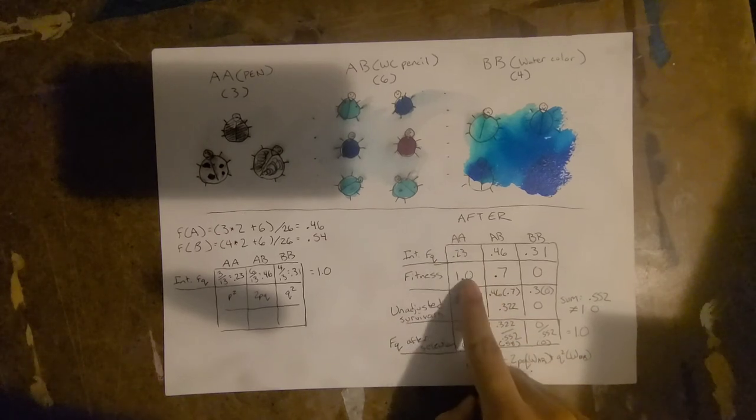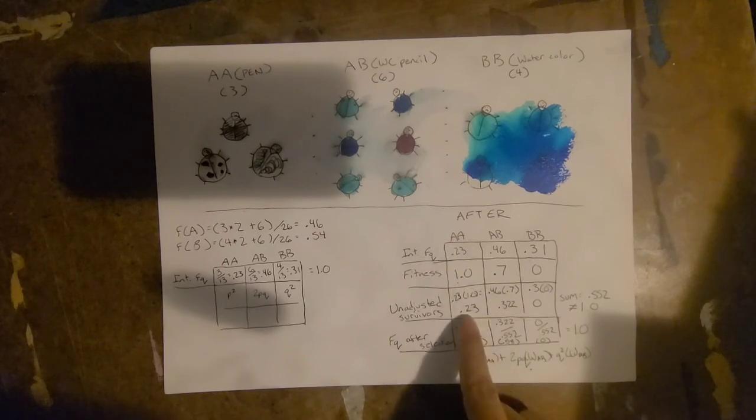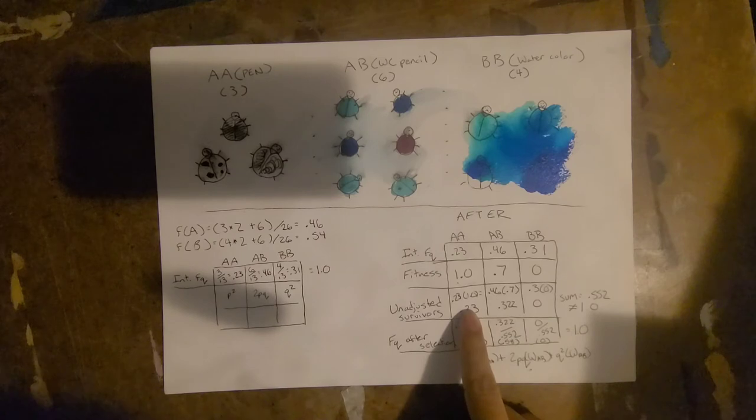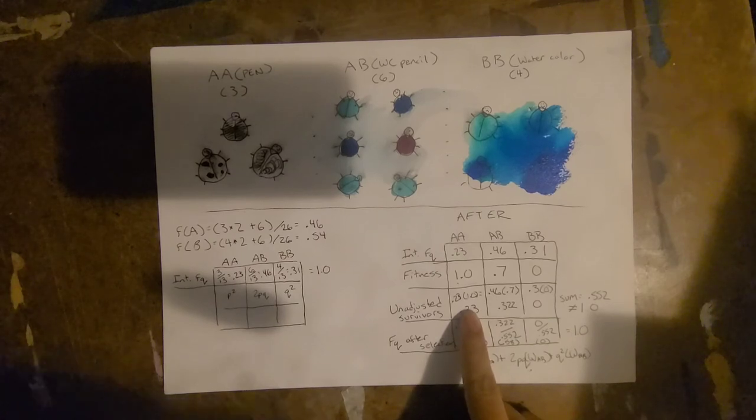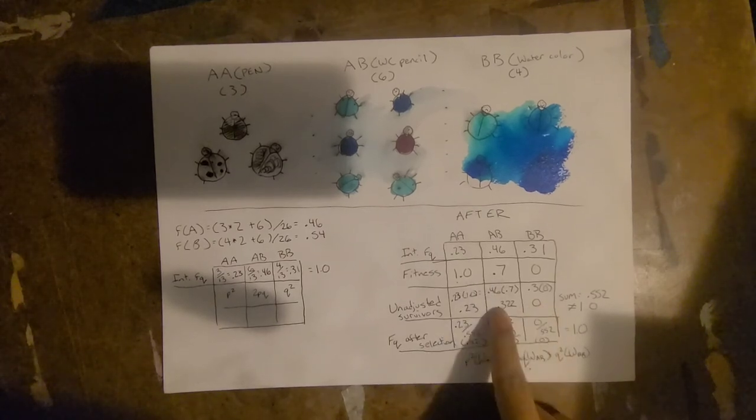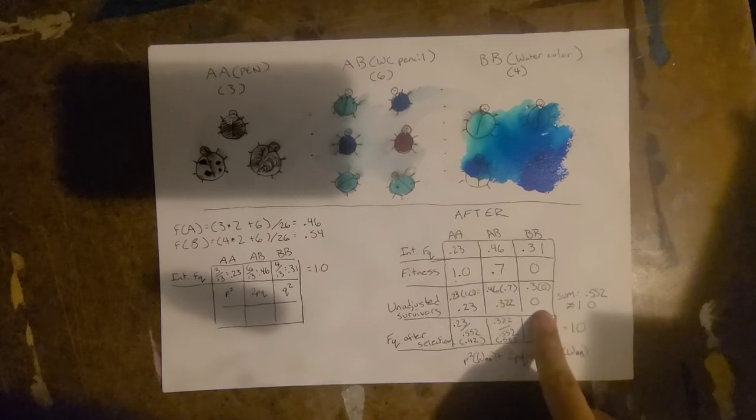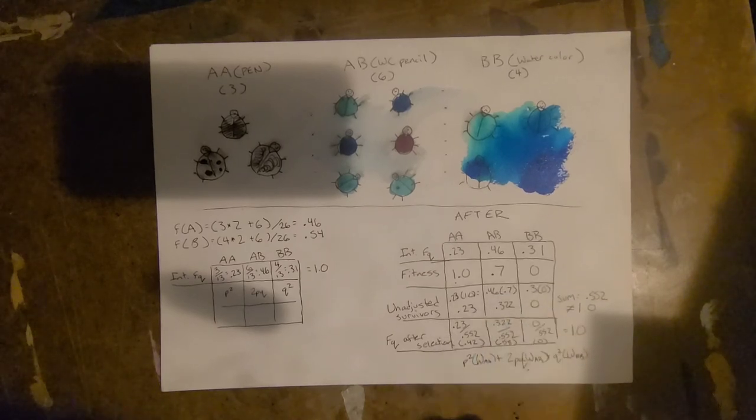Multiplying the initial frequency by the fitness value will give us the unadjusted survivors: 0.23, since mostly nothing happened to the big A big A population, 0.322 for the heterozygous population, and the watercolor population, big B big B, got wiped out. Too bad.